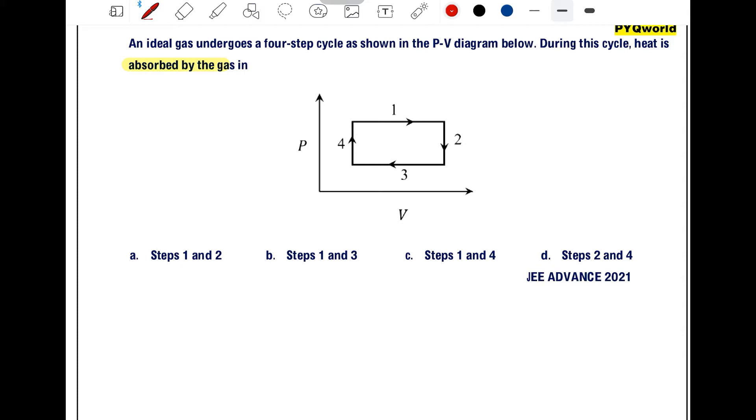We know that if heat is positive, then the heat is absorbed by the gas, and if heat is negative, then the heat is rejected by the gas. So in this question, we need to find where heat is absorbed, meaning heat must be positive.